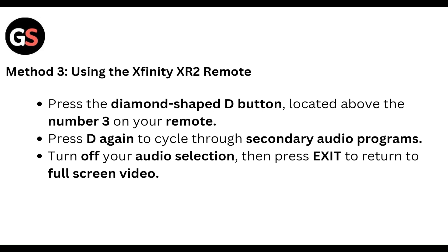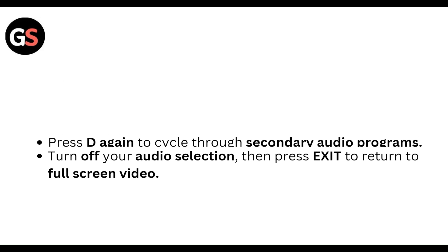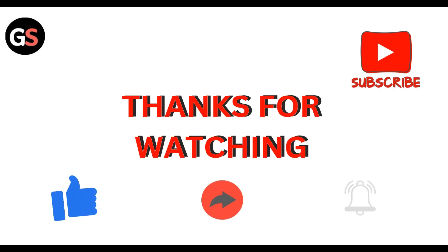Method 3: Using the Xfinity XR2 remote. Press the diamond SAP button located above the number 3 on your remote. Press it again to cycle through the secondary audio program options and turn off your audio selection. Then press Exit to return to the full screen video.